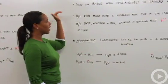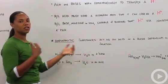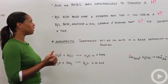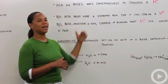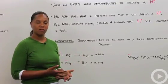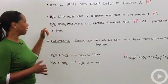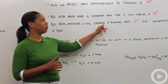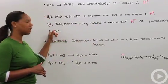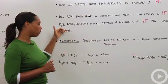Again, remember acids and bases work simultaneously to transfer protons between them. The Bronsted-Lowry acid must have a hydrogen atom that it can actually lose as a proton, like HCl did, and the Bronsted-Lowry base must be capable of binding that proton via the non-bonding electron pair, like I just showed with water.